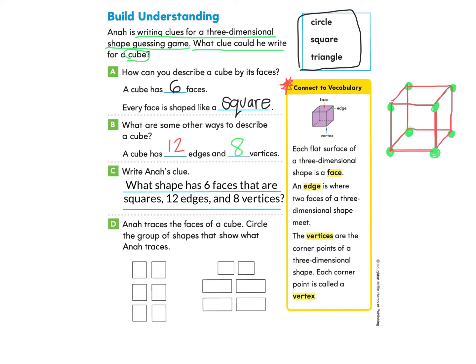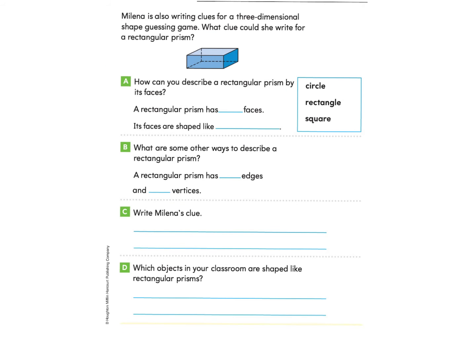Anna traces the faces of the cube — circle the group of shapes that show what Anna traces. We're looking for the faces of this cube. What shape are they? They're squares. Here we have six squares, and another option shows two squares and four rectangles. The faces of a cube would be this one — they're all the same: every face is shaped like a square and there are six of them. Nice work.